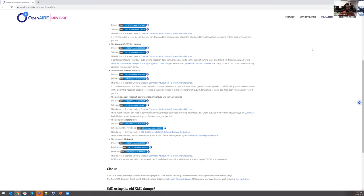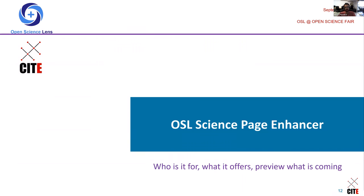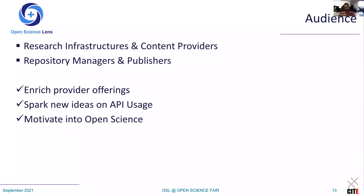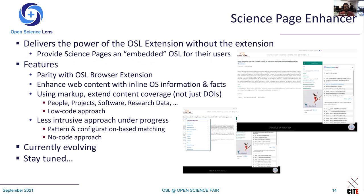After this quick demonstration, let's jump back to the presentation and talk a little bit about the Science Page Enhancer. In this case the audience is primarily research infrastructure content providers — repository managers and publishers — and the aim is to enrich what they're offering, spark new ideas on API usages, and motivate them into open science. In a sentence, the Science Page Enhancer gives them an embedded Open Science Lens for their users — empowering those users to see what we just saw without needing to install the extension.